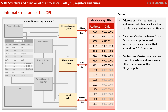Now let's go through each of the buses. The first is the address bus. You'll notice this is unidirectional, meaning information only flows in one direction — from the processor to main memory. The address bus is responsible for carrying the actual memory addresses that identify where data needs to be read from in memory, or where data needs to be written to in memory.